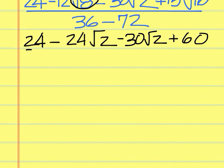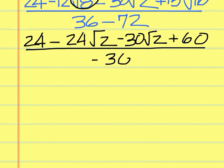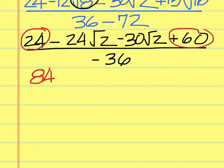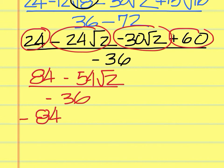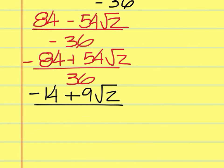You have two items on top that can be simplified. 24 plus 60 is 84, and minus 24 square root of 2 minus 30 square root of 2 is minus 54 square root of 2. All of this over negative 36. Change the sign of everything to get negative 84 plus 54 square root of 2 over 36. Divide all of it by 6 to come up with negative 14 plus 9 square root of 2 over 6. This is your final answer.